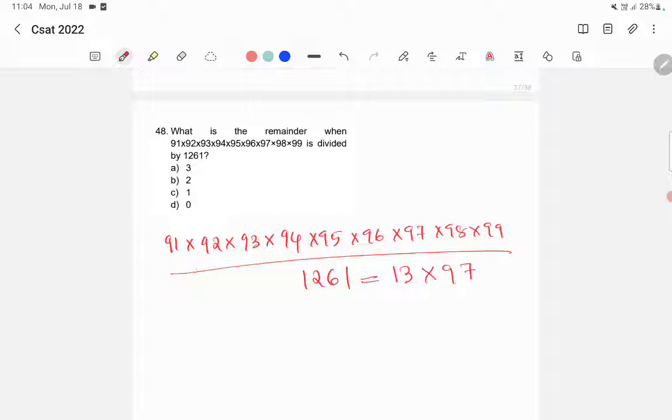So 1261 is equal to 13 into 97. 97 got cancelled, and 13 and 13 into 7 is 91. So what we can see here is that the numerator is exactly divisible by the denominator.